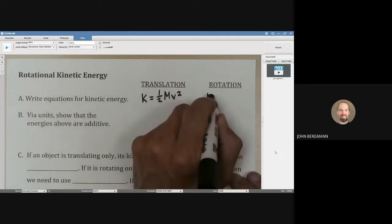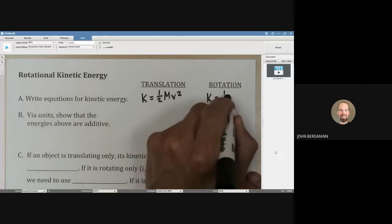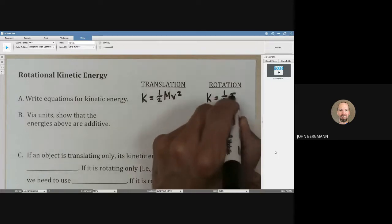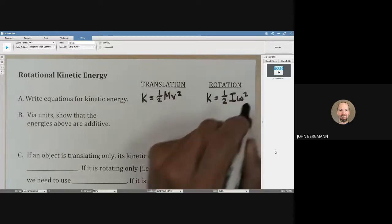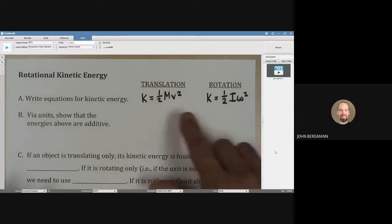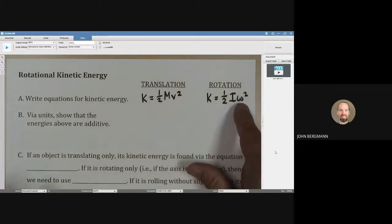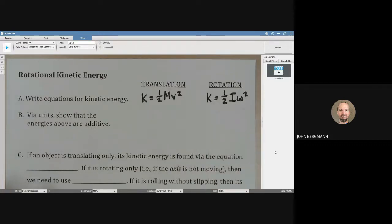For rotation, it's a similar looking equation, one-half I omega squared. The rotational analog of mass is moment of inertia. The rotational analog of v is omega. So that's pretty neat.